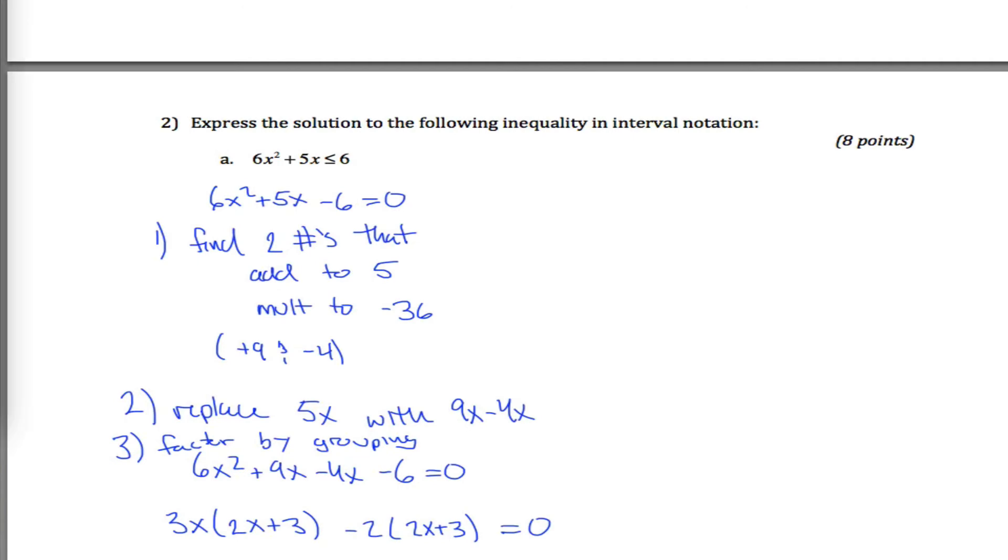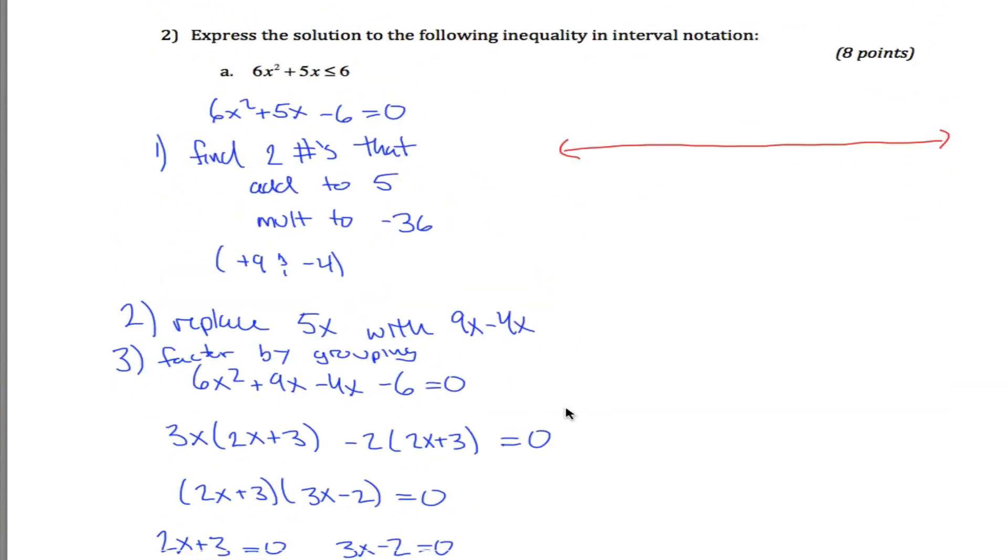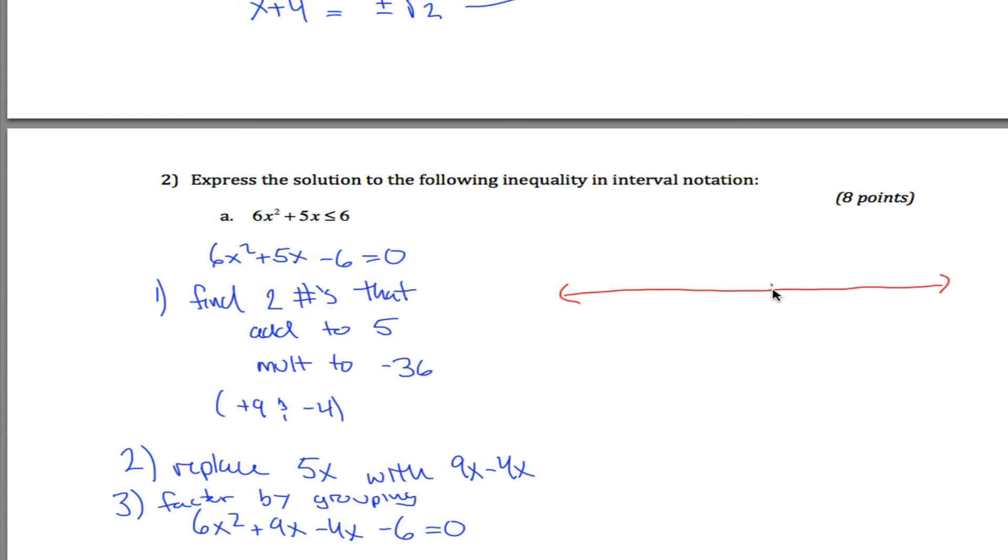So what you do next is draw number line and plot those two solutions. Negative 3 halves and positive 2 thirds. Let's see, 0 is here. Positive 2 thirds, sure, that can be there. There's 1 out there somewhere. Negative 3 halves, yeah, somewhere over here. Not drawn to scale, but that's okay. Negative 2 is out here. Negative 1 somewhere in there. Good enough.